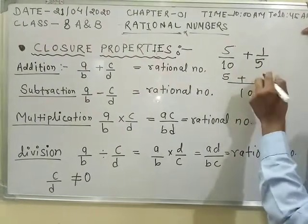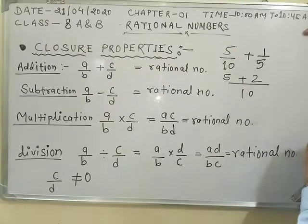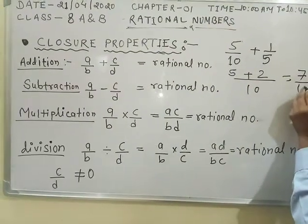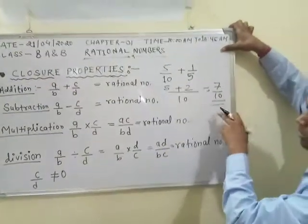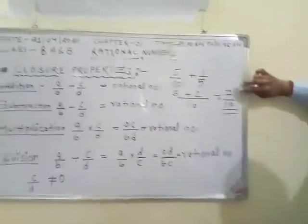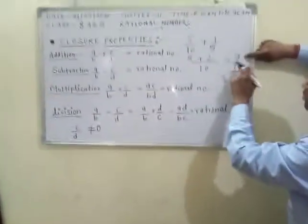2 into 1 is 2. The result is 7/10, it is also a rational number. In a previous class I told you, a rational number is a form of p/q.